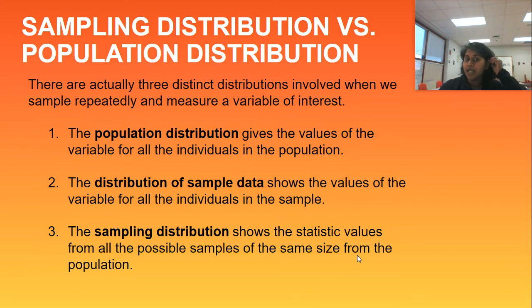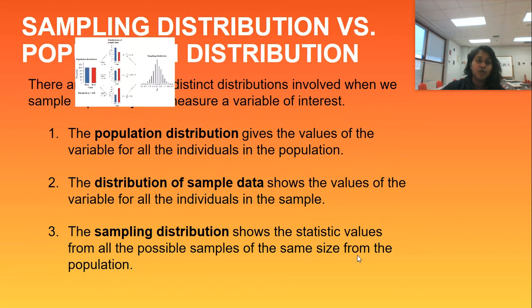And the third, what we're actually working on today, is the sampling distribution, which shows the statistical values from all possible samples of the same size for the population or a simulated version of all possible samples. Since it is impossible more often than not to get every single sample, that is why we do samples. So let's move forward.